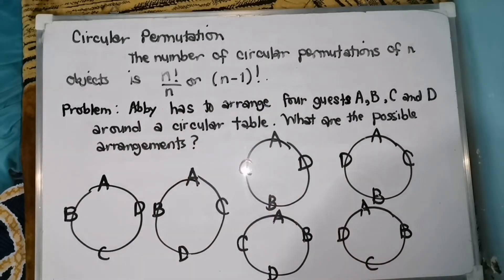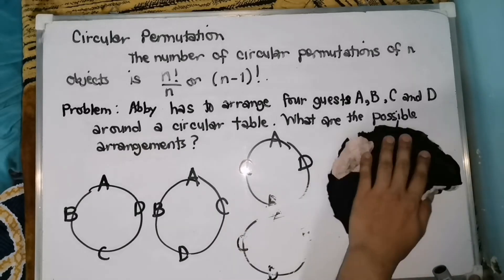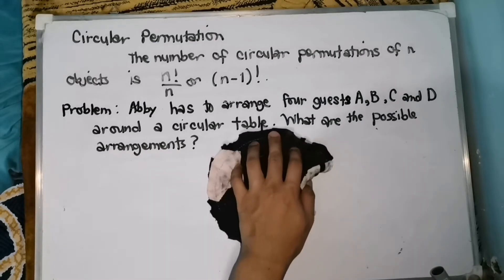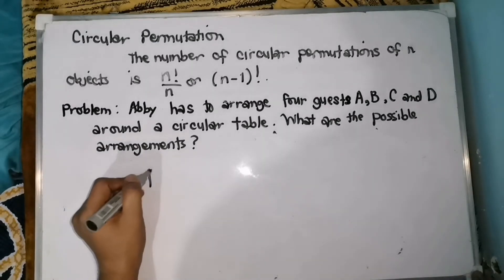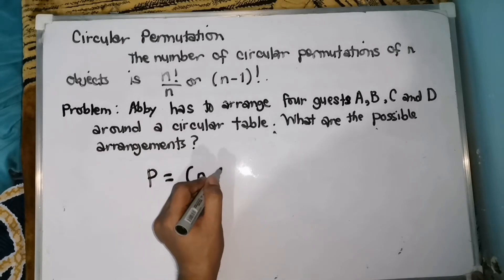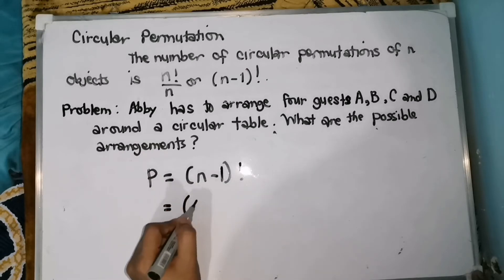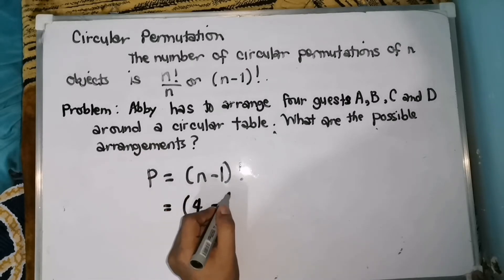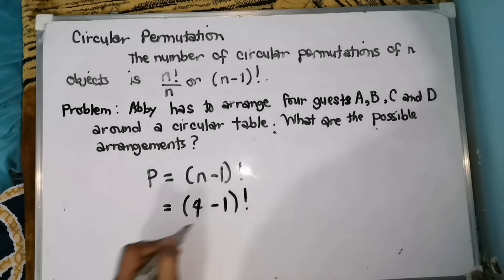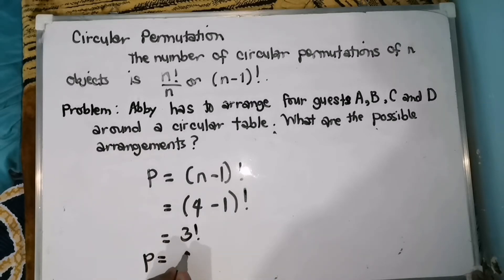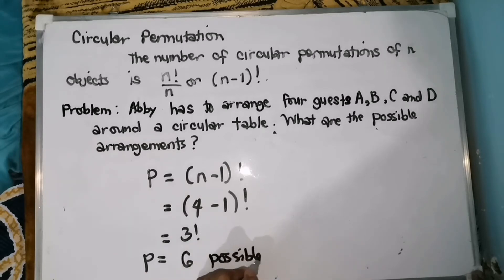So, in this case, there are six circular permutations. So, gamitin natin yung formula. That is P equals to the quantity n minus one factorial. Your n is four because there are four guests — minus one — quantity factorial. So, four minus one is three factorial. And three factorial is six. So, therefore, there are six possible arrangements.